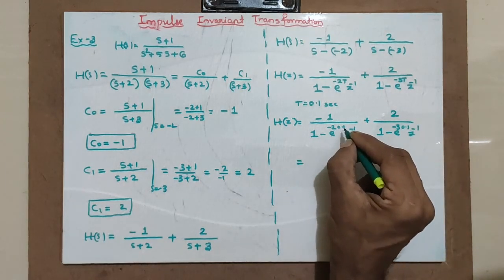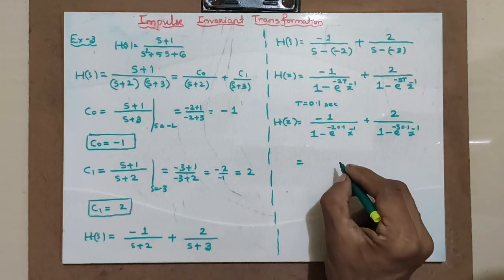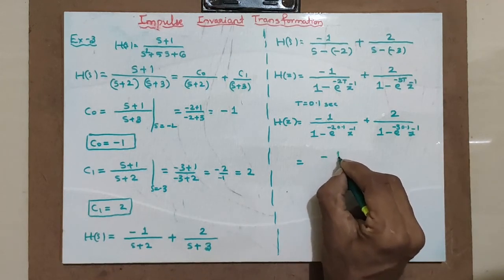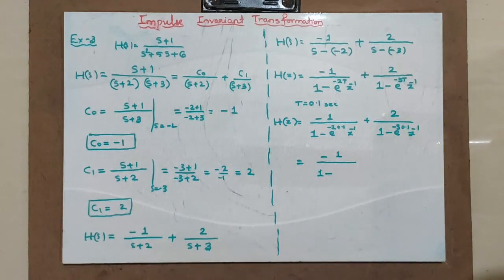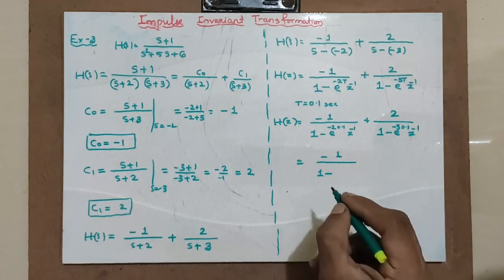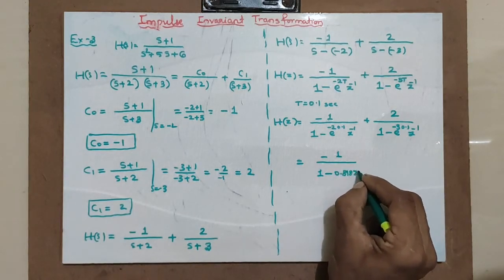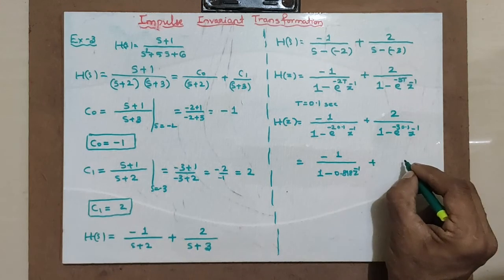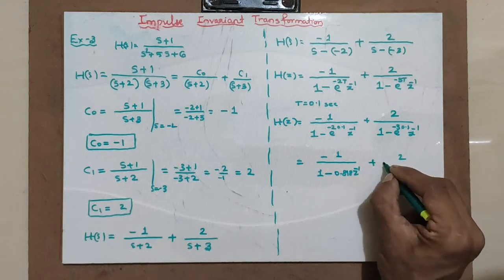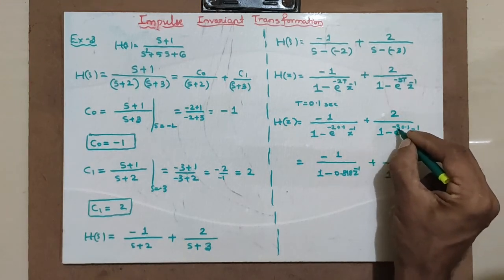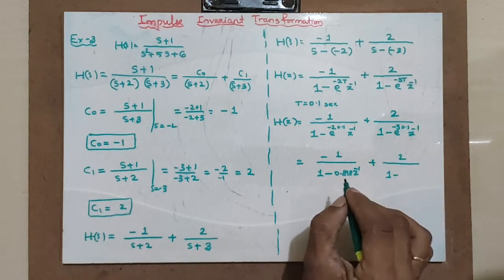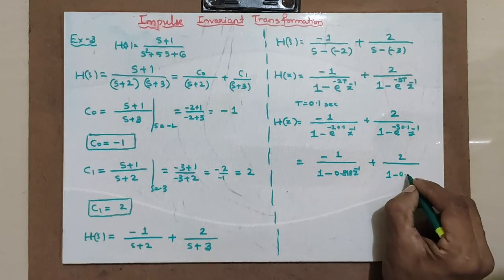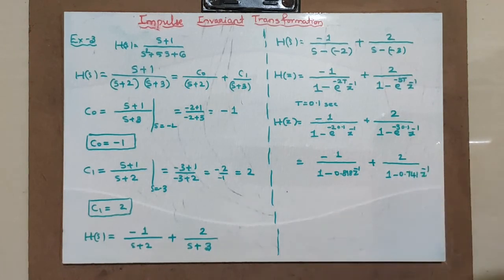Now e raised to minus 0.2 equals 0.818, and e raised to minus 0.3 equals 0.741. So H(z) becomes minus 1 divided by (1 minus 0.818 z raised to minus 1), plus 2 divided by (1 minus 0.741 z raised to minus 1). Use your calculator to verify these values.